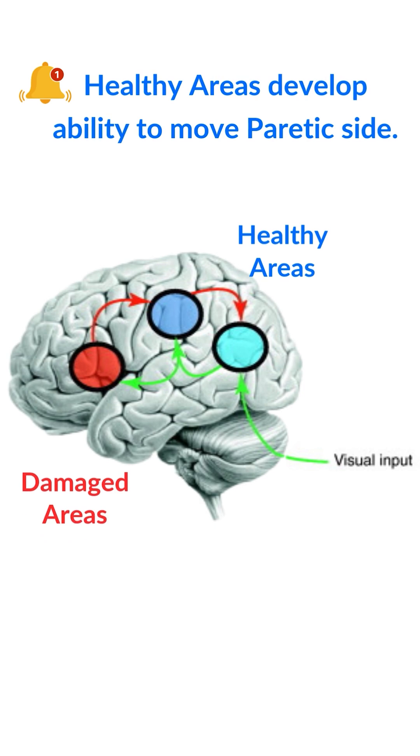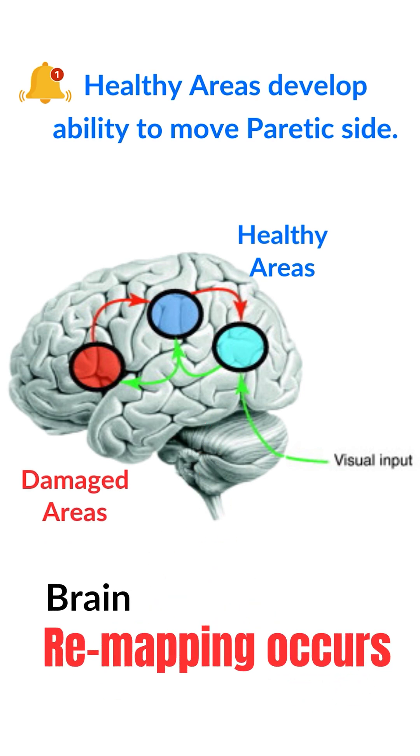The brain remaps movement control from damaged areas to healthier areas. In summary, the brain learns a new way to control the old movement.